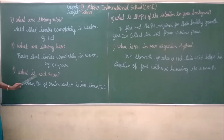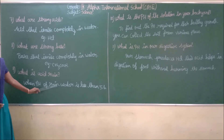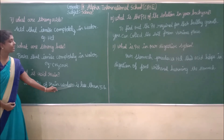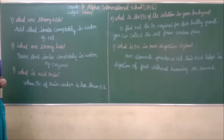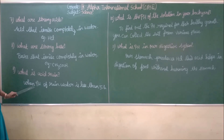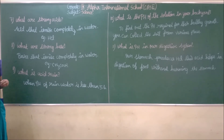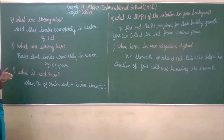What is acid rain? When the pH of rainwater is less than 5.6, we call that rain acid rain.